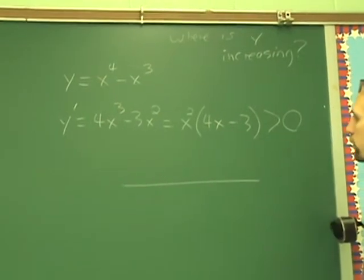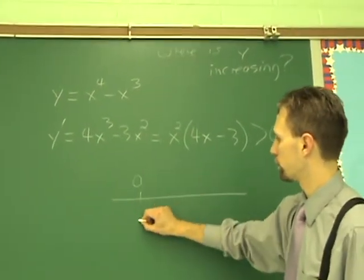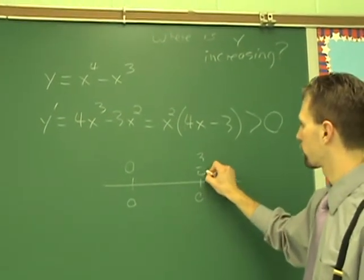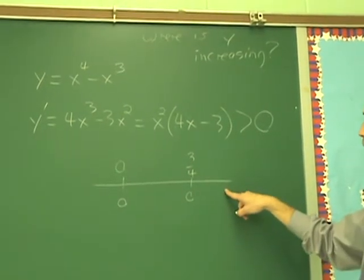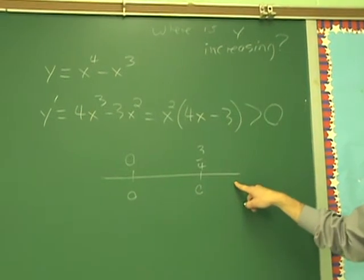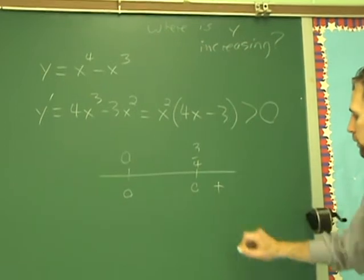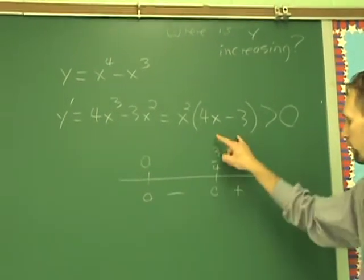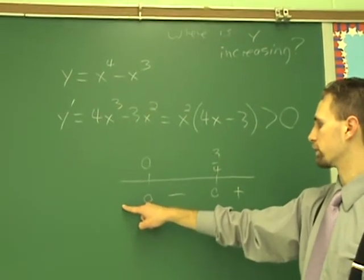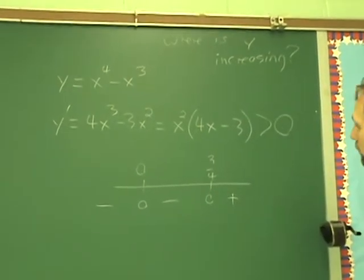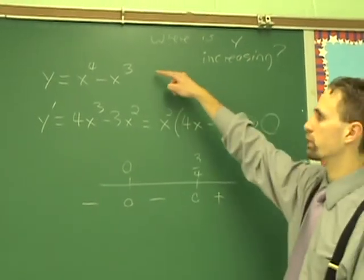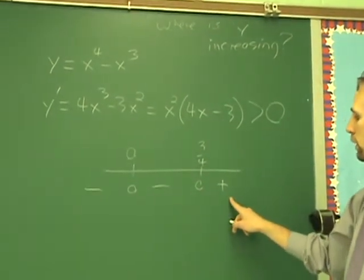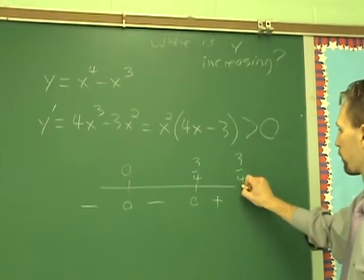So you draw a sign chart. You mark out where it's zero — the function is zero at zero and at three-fourths. These are the x values. To complete the sign chart: if x is greater than three-fourths, plugging in gives a positive value, so y prime is positive there. Between zero and three-fourths, the value is negative. And if x is less than zero, you again get negative values for y prime. So the original function is increasing where its derivative is positive — that is, increasing on the interval (3/4, infinity).